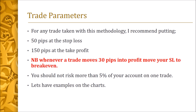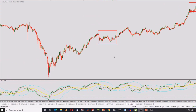Whenever a trade moves 30 pips into profit, move your stop loss to break even. This is a golden rule, because these trades mostly move to the 30-pip region very quickly but will then come back to take out your stop loss. So whenever a trade moves 30 pips into profit, move your stop loss to break even. You should not risk more than 5% of your account on one trade. Let's have some examples on the charts — this is AUD against USD.